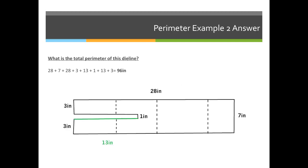When calculating perimeter, I'm going to go clockwise in a circle around my shape. So I'll start with 28 across the top, 7 down the side, 28, 3, 13 inches, 1 inch, 13, and 3. When I add all of them together, I get 96 inches as the perimeter.